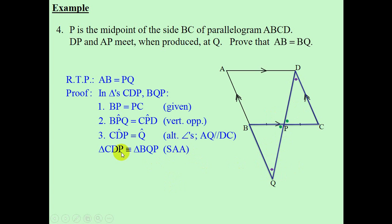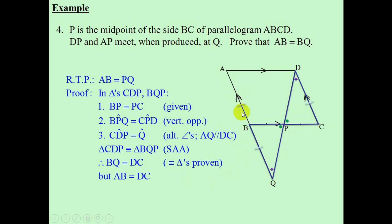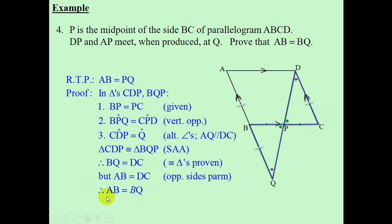Now, what is my conclusion? If these two triangles are congruent, we can conclude that BQ is equal to DC. But we know, as stated earlier, that AB is equal to DC. So we have AB equal to DC and BQ equal to DC — we see we have a common side DC. Therefore our conclusion is AB is equal to BQ.